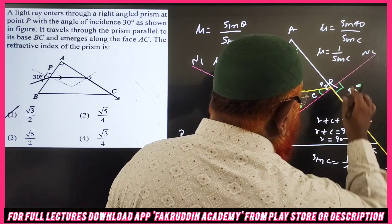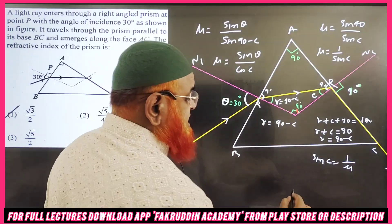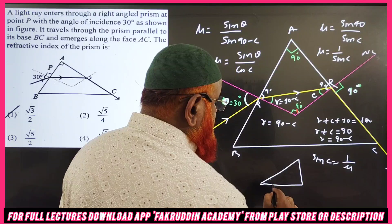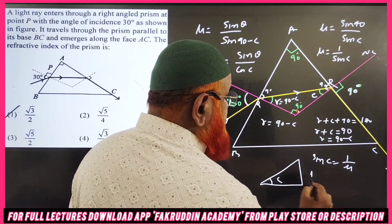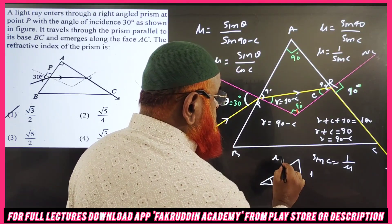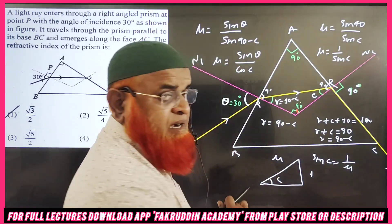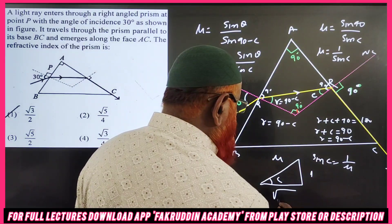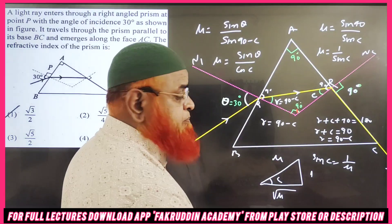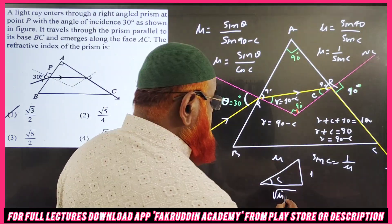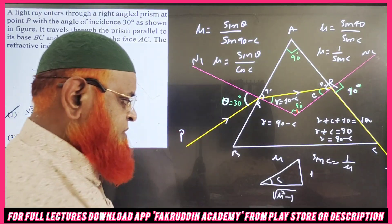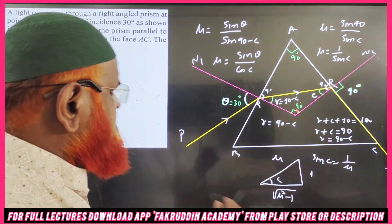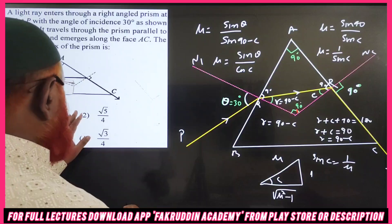That means sin c = 1/μ, which is the reciprocal. Drawing a right triangle with angle c, opposite side = 1 and hypotenuse = μ, the adjacent side by Pythagoras is √(μ² − 1).